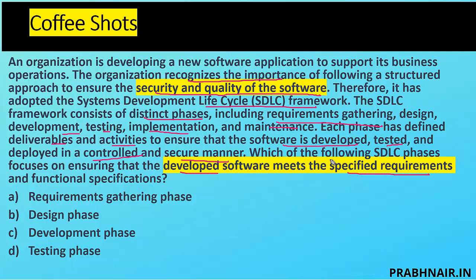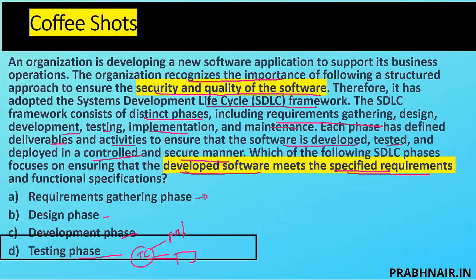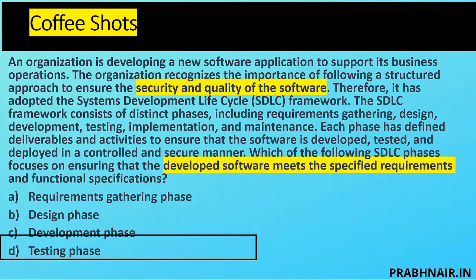One important tip: in paragraph-based questions, read the last line carefully because that's where the actual question is — that's how they test your patience and focus. In this question: requirement gathering is where we understand requirements (not verify them), design phase is where we design the application, and development is where we build it. The testing phase is where we create test cases based on functional requirements and design, and verify that the application meets what was agreed with the customer.